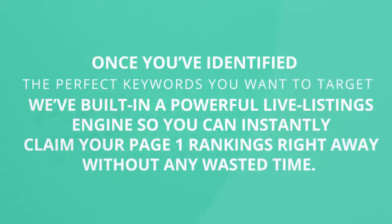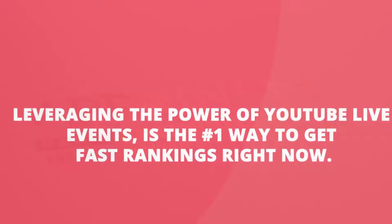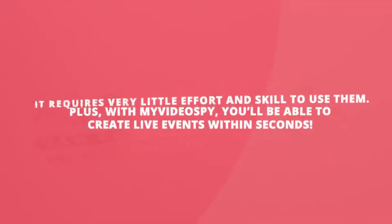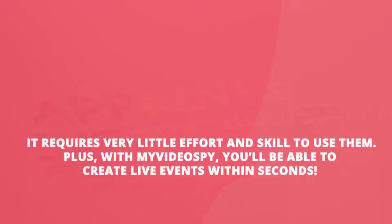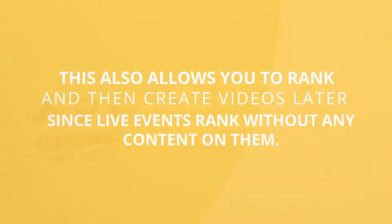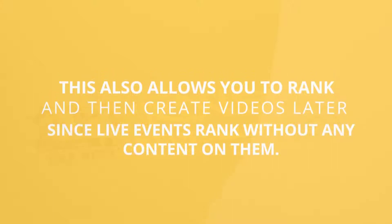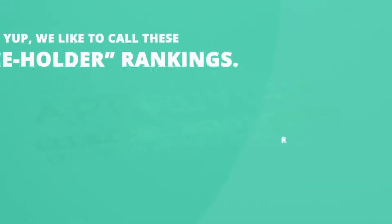From there we have our powerful live listings engine. Once you've identified the perfect keywords, we've built in a live listings engine so you can instantly claim your page one rankings right away without any waste of time. Leveraging YouTube live events is the number one way to get fast rankings right now — it requires very little effort and skill. With My Video Spy you'll be able to create live events within seconds, and this also allows you to rank first and then create videos later, since live events rank without any content. We call these placeholder rankings.